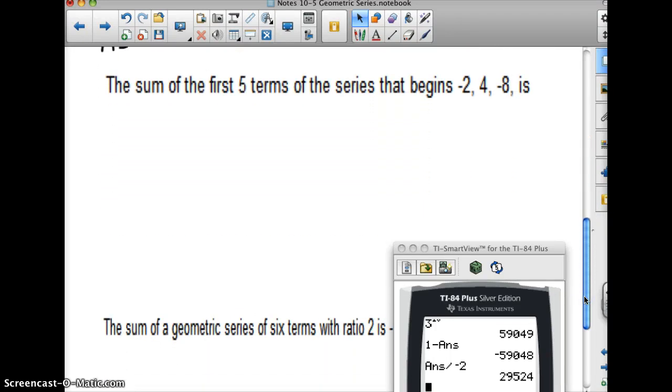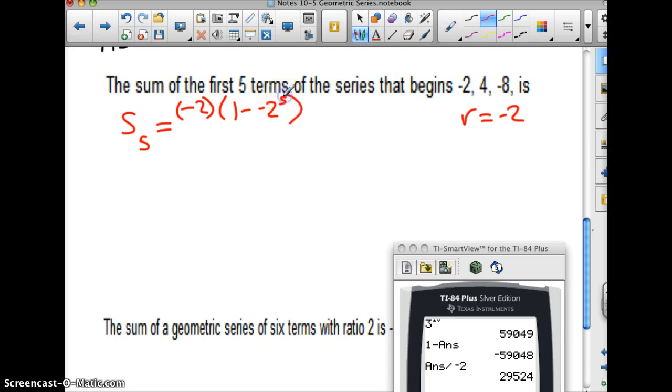The sum of the first 5 terms of the series that begins negative 2, 4, negative 8 is. Well, in this case, the sum of the first 5 terms is going to equal a sub 1, which is negative 2, times 1 minus r. And in this case, r is negative 2. So 1 minus negative 2 raised to the n. Well, I'm doing 5. All over 1 minus negative 2.